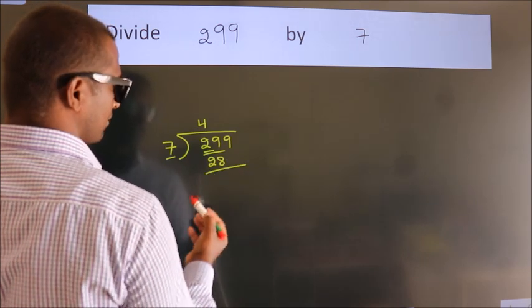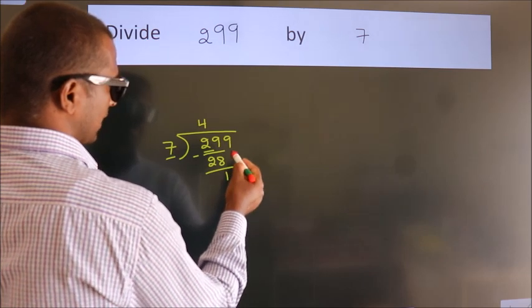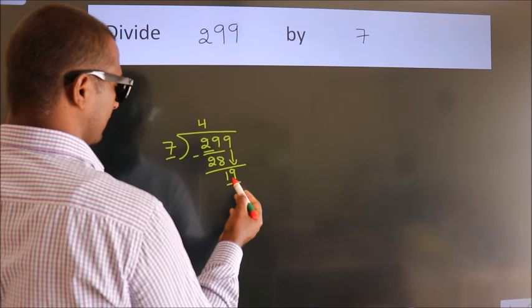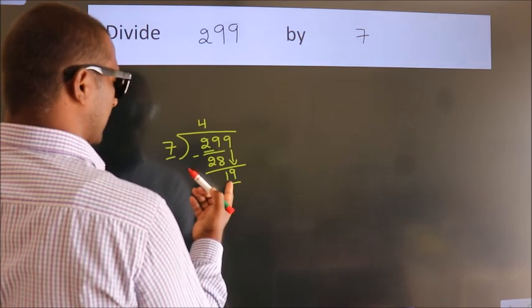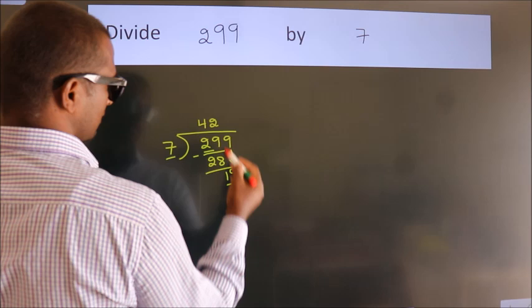Now we should subtract. We get 1. After this, bring down the beside number, so 9 down. So 19. A number close to 19 in 7 table is 7 twos 14.